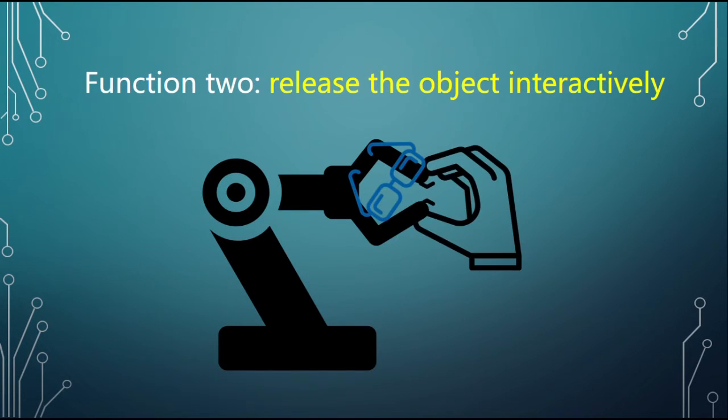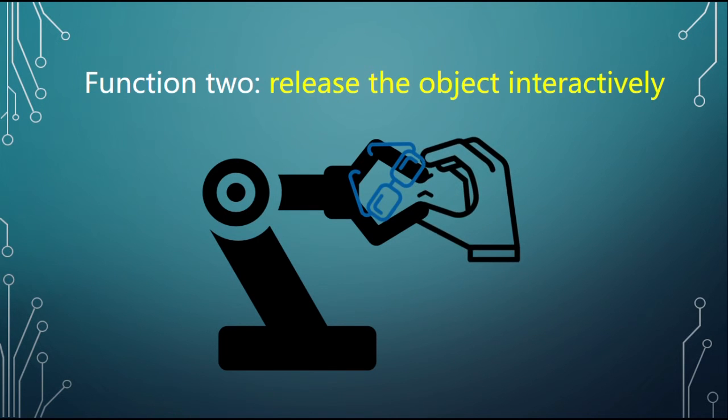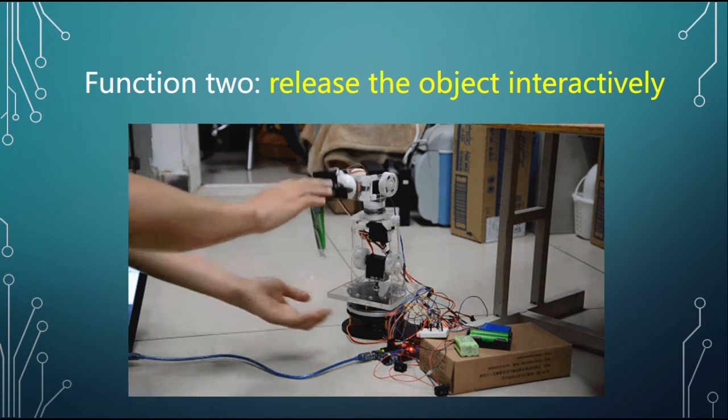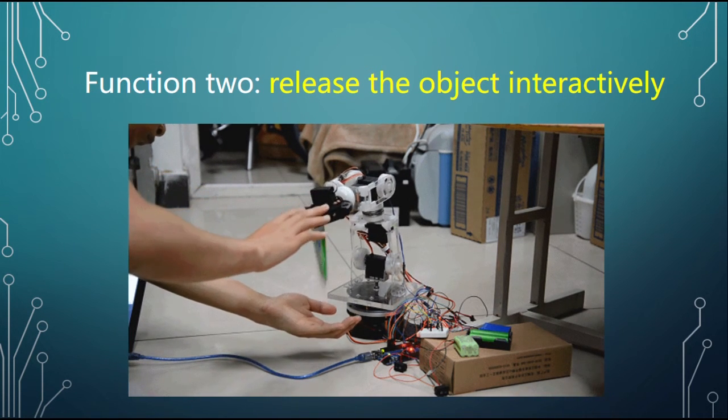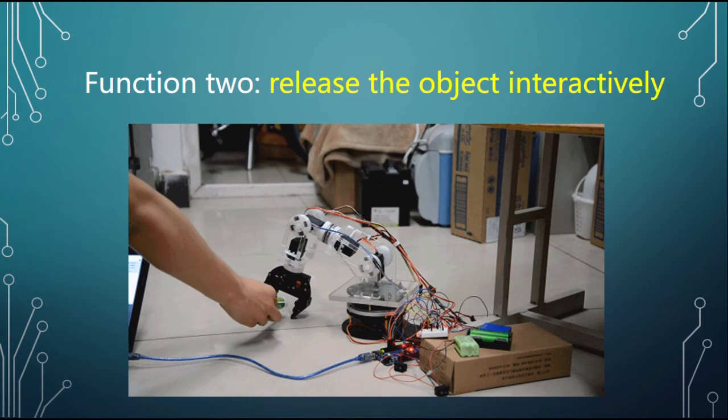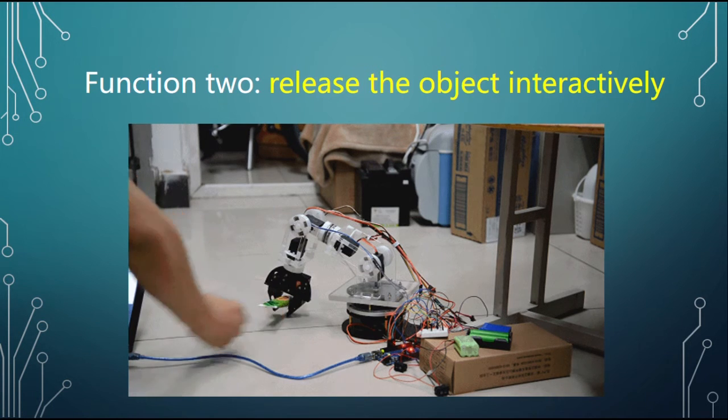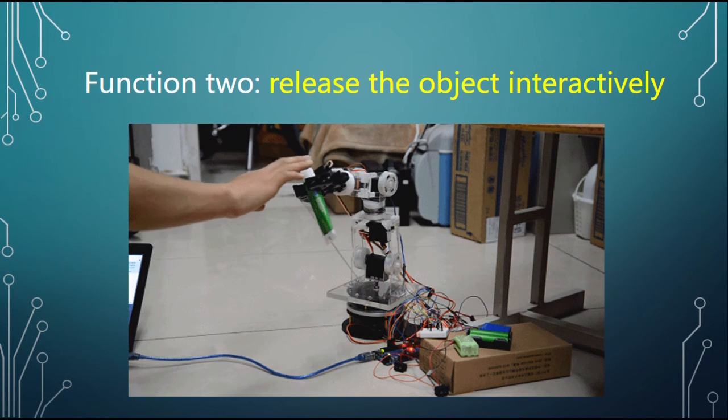There are two ways to release the holding object. One is done by remote computer control. The other can be done by manually pressing the manipulator on-site. The flexible joint will detect the pressure change and then send a signal to release the holding object.